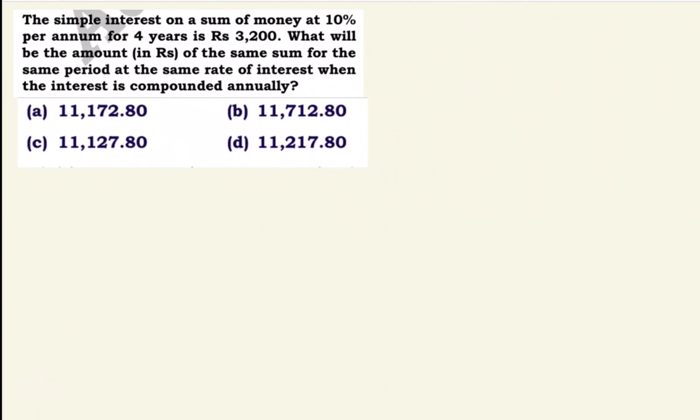Next question: The simple interest on a sum of money at 10% per annum for 4 years is Rs.3,200. What will be the amount of the same sum for the same period at the same rate when the interest is compounded annually?